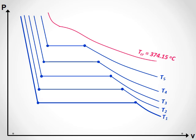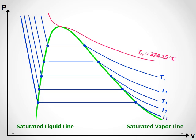Again, a line connecting all the saturated liquid states is called the saturated liquid line. And a line connecting all the saturated vapor states is called the saturated vapor line. The two lines meet at the critical point.